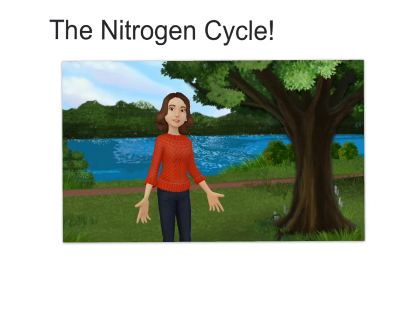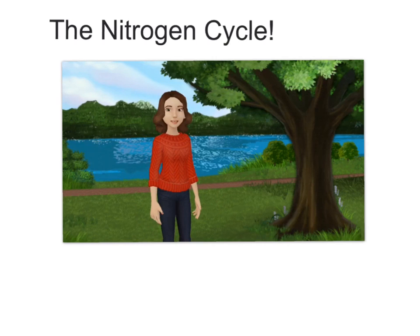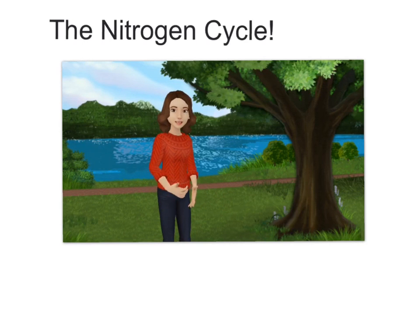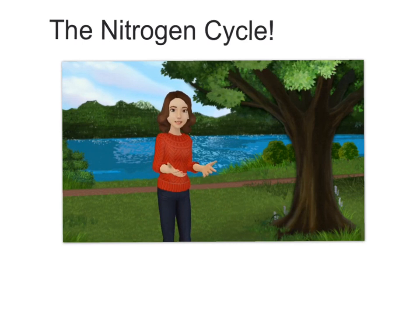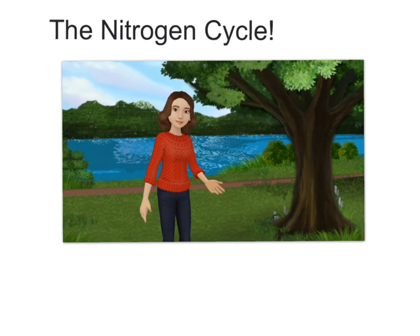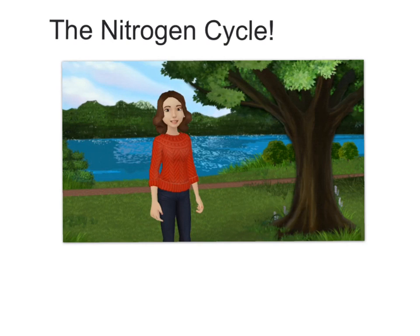Our last cycle that we'll be learning about is the nitrogen cycle. Nitrogen is really important to both plants and animals and all living things on this planet. Please follow along with me as I go through the notes. Feel free to take notes as I talk and also write down each step of the nitrogen cycle that correlates with the diagram.